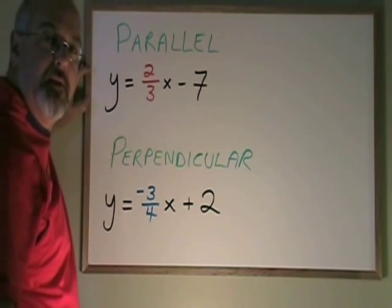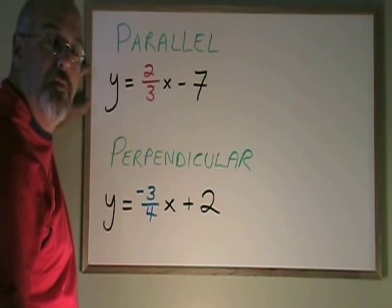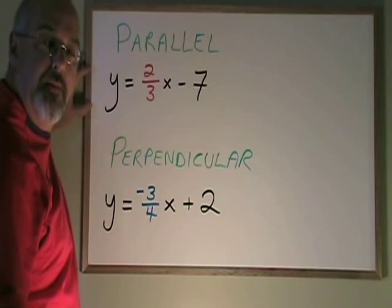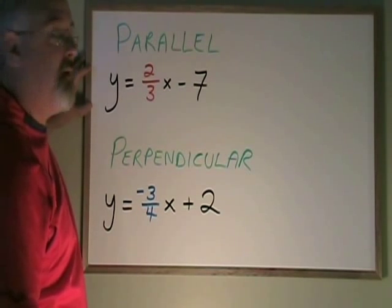Parallel lines have the same slope and perpendicular lines have slopes which are the negative reciprocal of each other. Let's see what this looks like when we're given an equation.